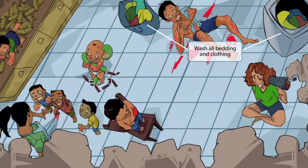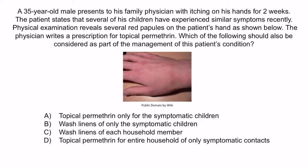Now let's do a question to apply what you've learned. A 35-year-old male presents to his family physician with itching on his hands for two weeks. Several of his children have experienced similar symptoms recently. Physical examination reveals several red papules on the patient's hand. The physician writes a prescription for topical permethrin. Which of the following should also be considered? A: topical permethrin only for the symptomatic children. B: wash linens of only the symptomatic children. C: wash linens of each household member. Or D: topical permethrin for the entire household of only symptomatic contacts. From the question stem, this patient has scabies — very itchy, infectious, with two children also affected, and a photo consistent with scabies.